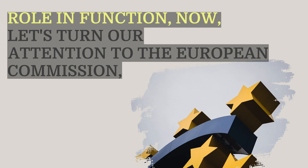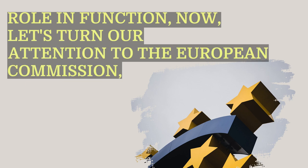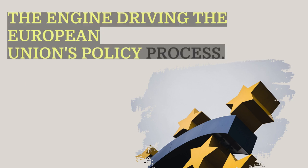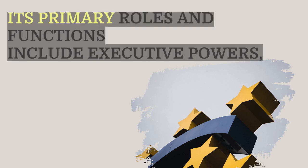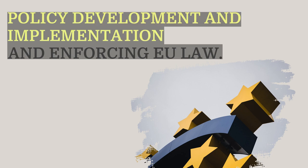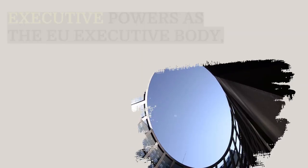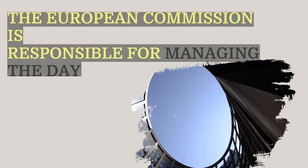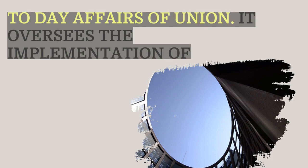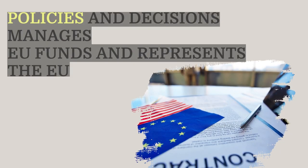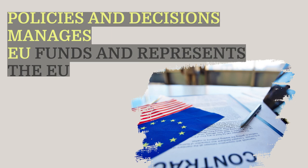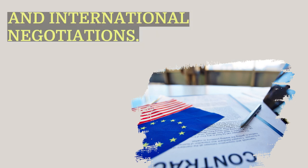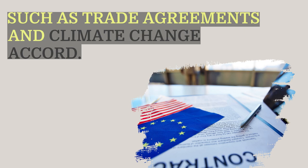Now let's turn our attention to the European Commission, the engine driving the European Union's policymaking process. Its primary roles and functions include executive powers, policy development and implementation, and enforcing EU law. As the EU's executive body, the European Commission is responsible for managing the day-to-day affairs of the Union. It oversees the implementation of policies and decisions, manages EU funds, and represents the EU in international negotiations, such as trade agreements and climate change accords.